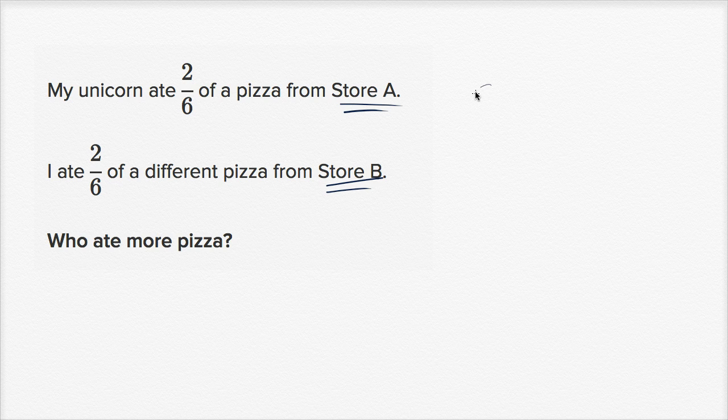Store A's pizza might look like this. Store B's pizza might look like this. So if this was the case, so if this is store A and this is store B, you eat two-sixths of this. Let me divide this into six. So that's halves, and then sixths.